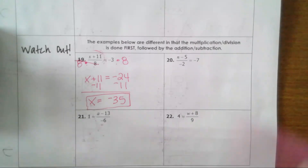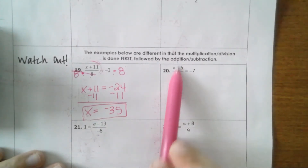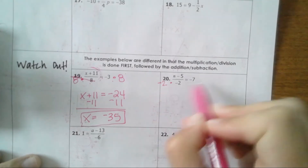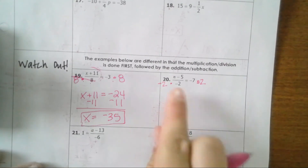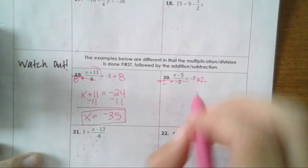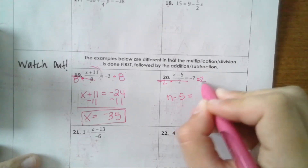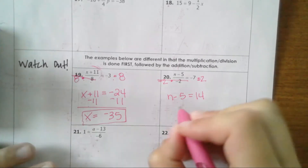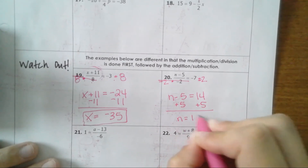Let me do one more. If you see a fraction to start with that involves the variable, always try to get rid of that denominator by multiplying by it. If it's negative, make sure you pull the negative with it. Your denominator cancels, and you're left with n minus 5 equals negative 7 times negative 2, which is positive 14. Then go back to your one-step equation process: add 5 to both sides, and you get n equals 19.